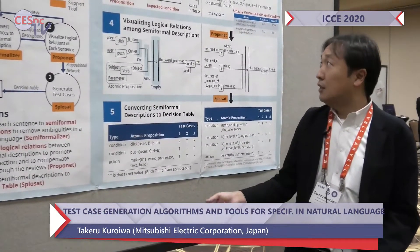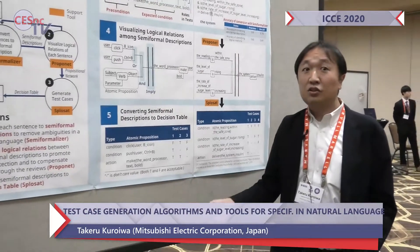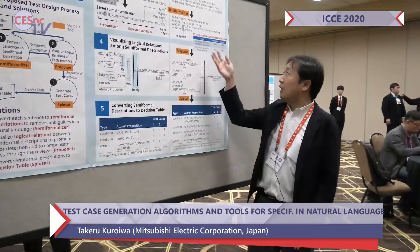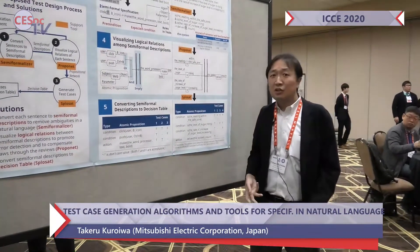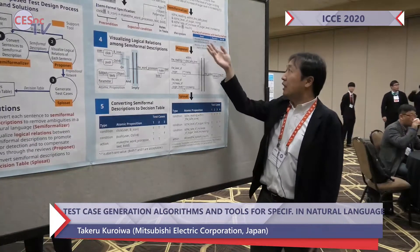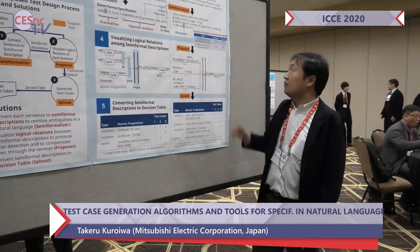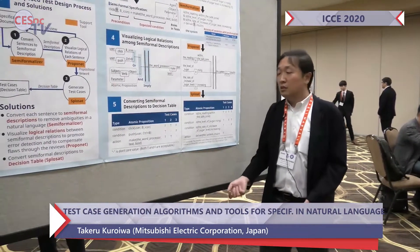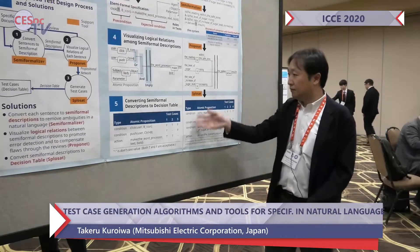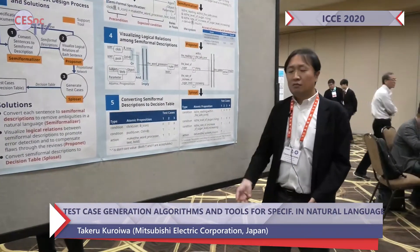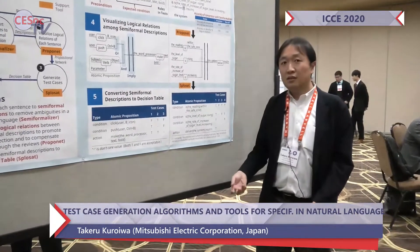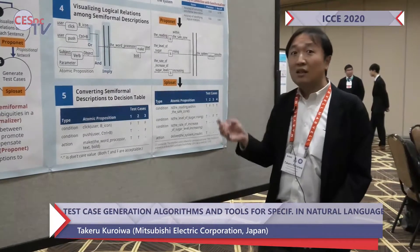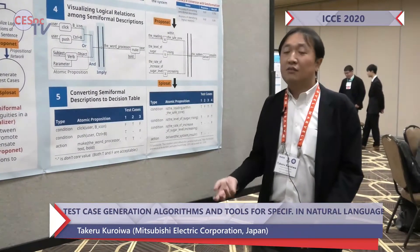By these solutions, we got the result that the accuracy of conversion from system specifications in natural language to the decision table improved. These three solutions make testers able to easily detect the lacks or ambiguities of specifications.